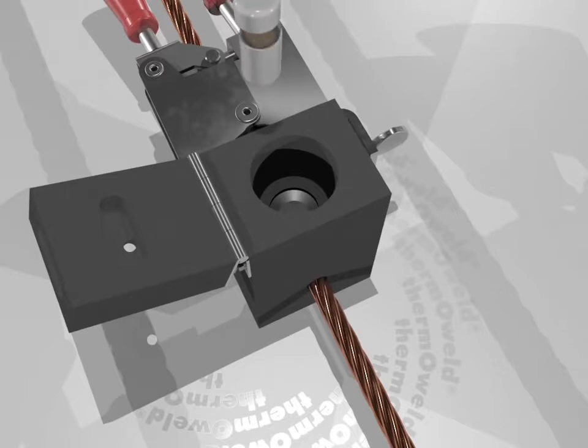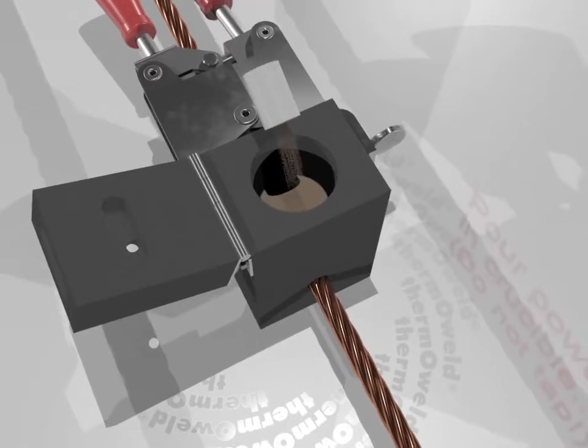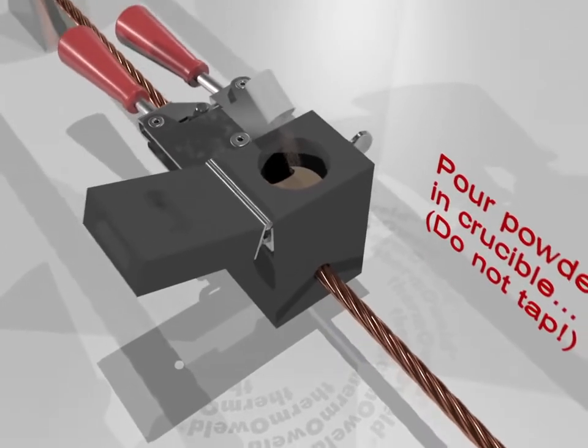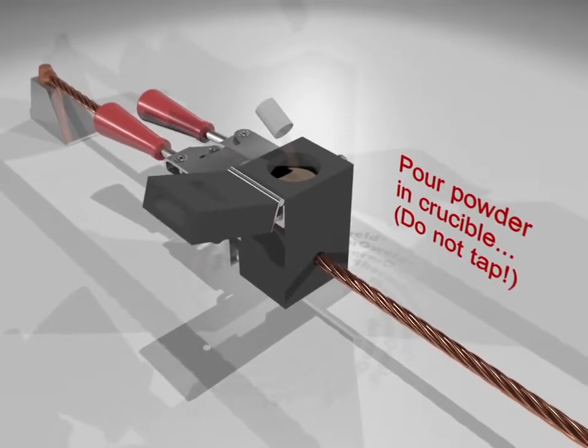Carefully add the proper weld metal into the mold. At the bottom of the weld metal container we pack our starting powder. Make sure you don't release any of the starting powder by tapping the tube.